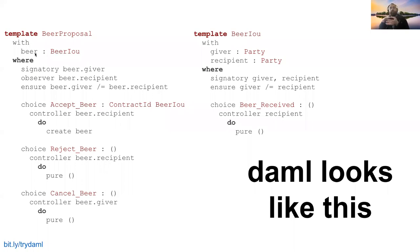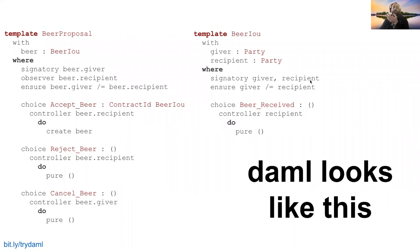So DAML is very explicit. The Beer Proposal template accepts a Beer IOU - that's basically what you need to instantiate your template. You need to provide it a Beer IOU in order to instantiate the Beer Proposal. The reason we're doing this in two templates instead of one is because DAML is very explicit. The Beer IOU requires a signatory of giver and recipient, meaning it needs two signatures from two different parties in order to actually be instantiated.